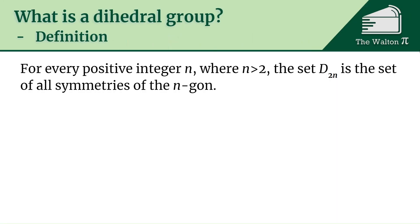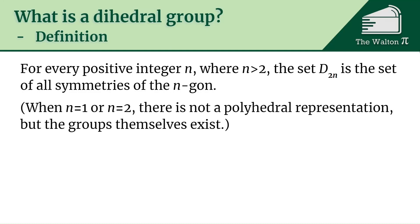If we start by looking at every positive integer n, where n is bigger than 2, then the set D_{2n} is going to be the set of all symmetries of the n-gon. When n is 1 or n is 2 there's not really a good representation for that in terms of shapes, but the groups are still going to exist.